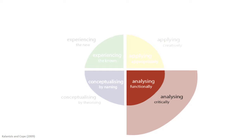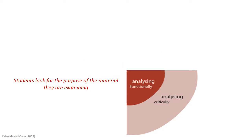Analysing involves examining and interpreting the underlying rationale for a piece of knowledge, an action, object or represented meaning. When students analyse functionally, they look for the purpose of the material they are examining: why was it created, what does it do, what does it cause or affect, what is the context of the material and what concepts does it make connections to?